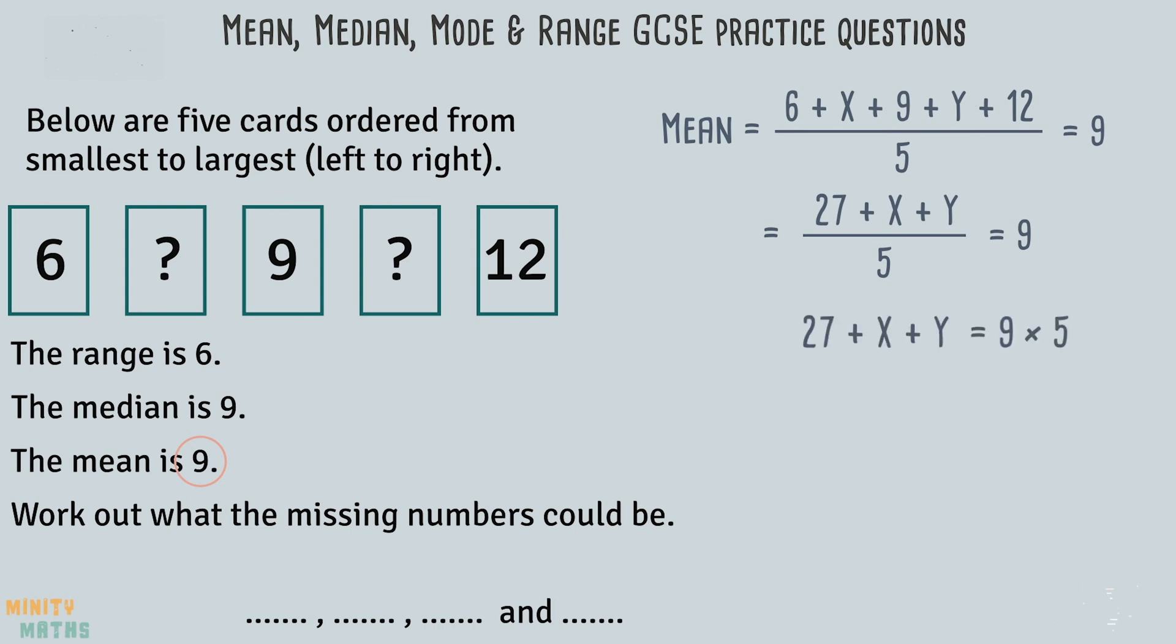Next, we can rearrange by multiplying both sides of the equation by 5, to get rid of the division. We now know that all five numbers must add up to 45. Let's get x and y on their own by taking away 27 from both sides of the equation. Now we know the two missing numbers must add up to 18.